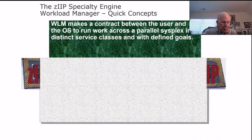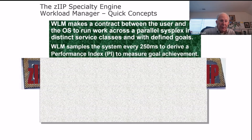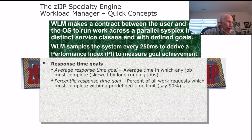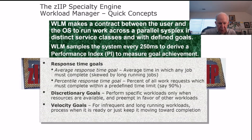WLM, which we've talked about before, is the mechanism by which you and the operating system figure out how work is going to be processed. You've got an enormous amount of work done by distinct service classes with defined goals within those service classes. WLM samples the system every 250 milliseconds to derive a performance index to help measure goal achievement. You can set average response time goals, percentile response time goals, discretionary goals for specific workloads, and even velocity goals for long-running tasks that need a lot of time.